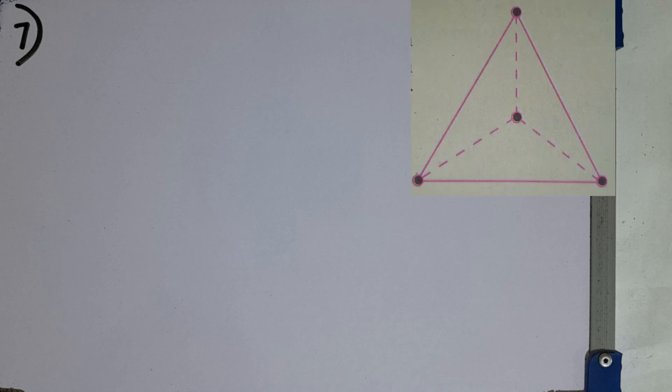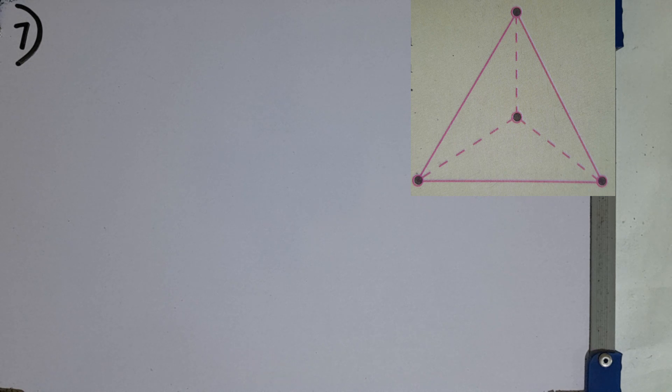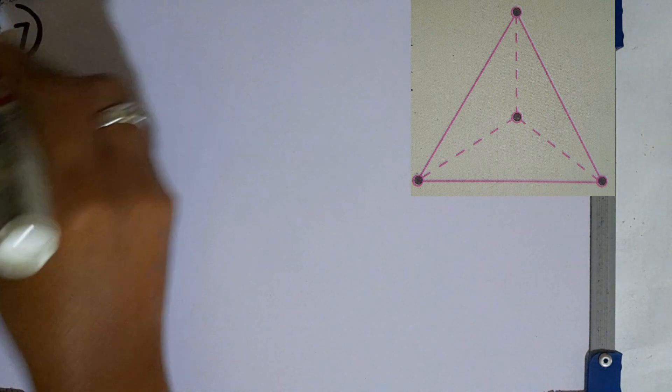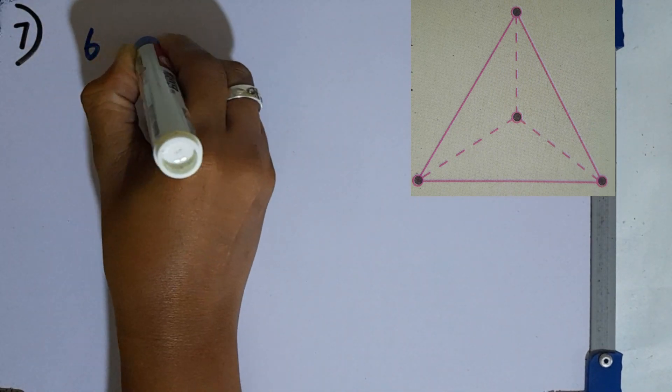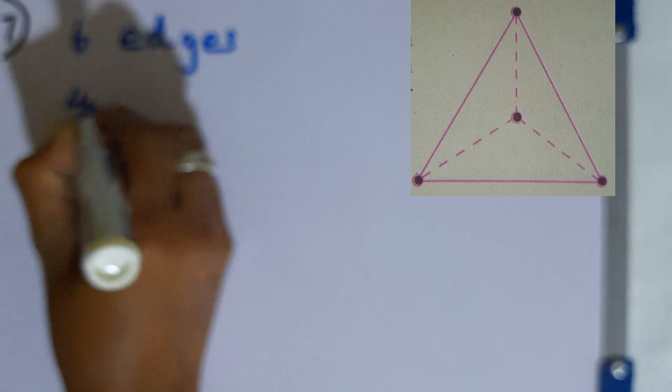Question number 7. Write the number of edges and the number of vertices of the regular tetrahedron. In the diagram you can see a regular tetrahedron. It has 6 edges and 4 vertices.